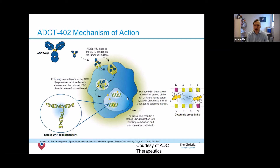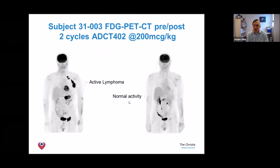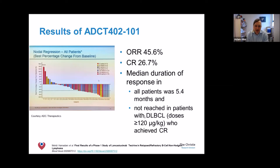Here is a patient at the Christie on a clinical trial of ADCT-402. He had undergone no fewer than five relapses of DLBCL. His PET scan on the left shows active lymphoma in the chest, abdomen, and groin. After just two doses of ADCT-402, he went into complete remission. In the phase one trial with varying doses, around a third of patients had tumor growth but the majority had shrinkage, and overall around one quarter went into complete remission.